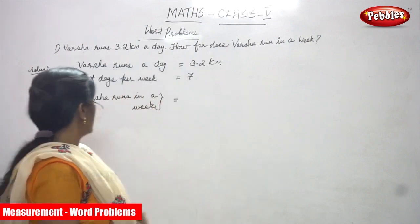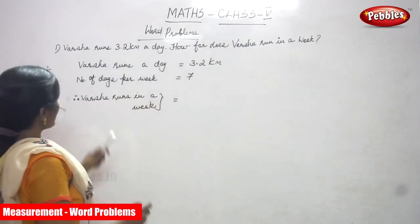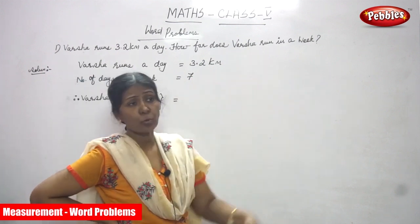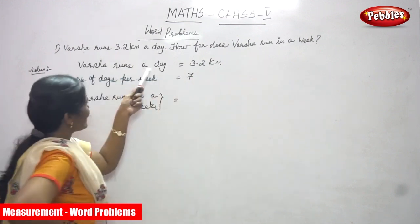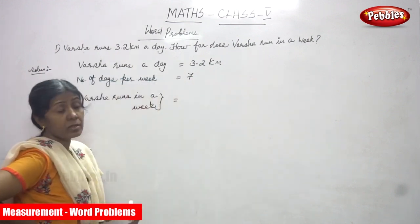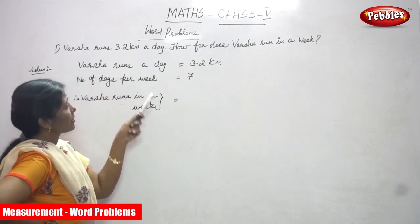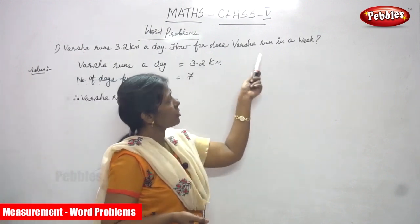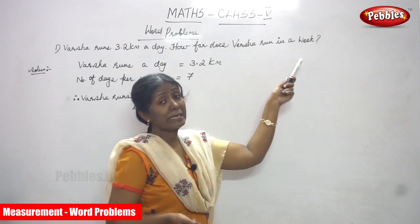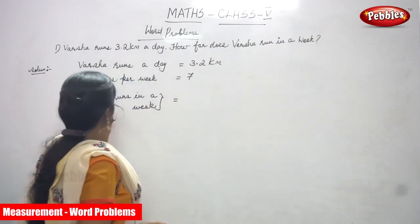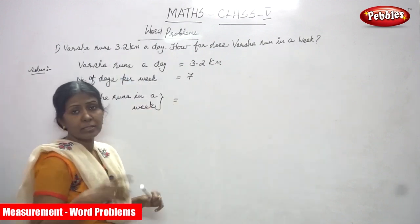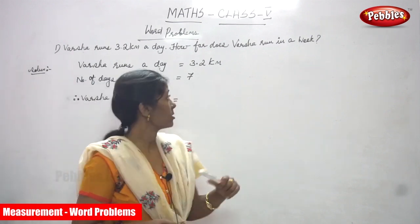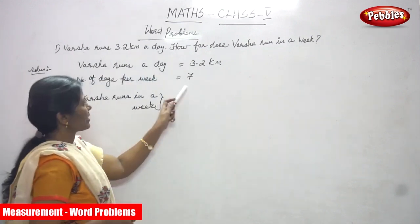Let's start the problem right now. Varsha runs 3.2 km a day. How far does Varsha run in a week? Every day she runs 3.2 km, and the question asks how far she runs in a week. That means we need the number of days per week, which is 7 days.